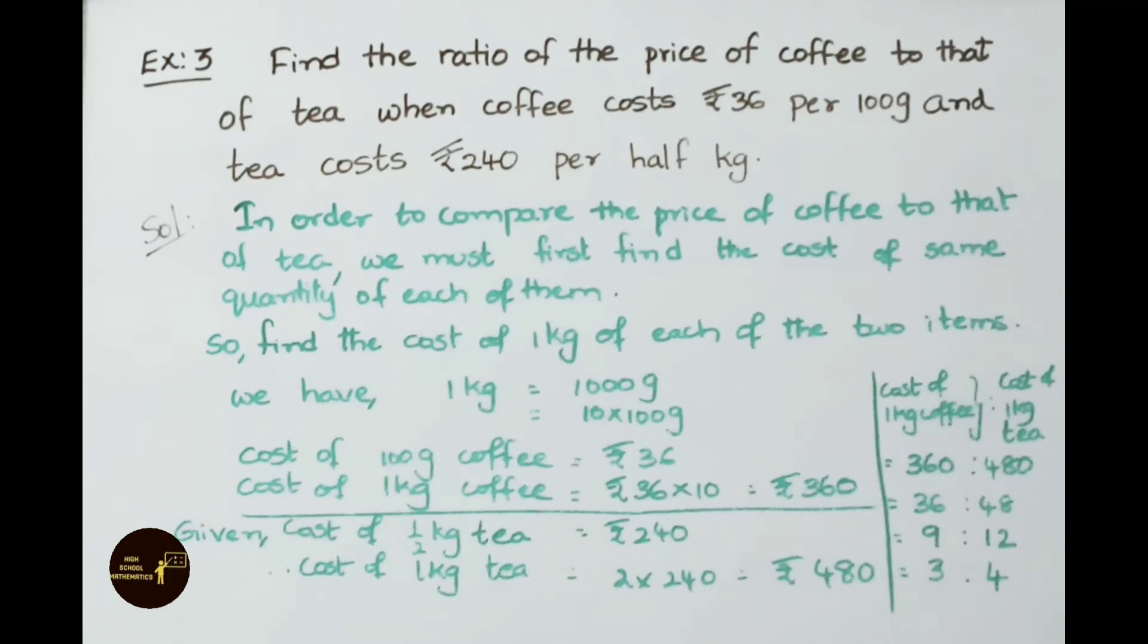We shall divide both the terms by 10. Then we get the value 36 is to 48. Again these two terms we shall divide by 4. 4 nines are 36, 4 twelves are 48. Dividing the both terms by 3, 3 threes are 9, 3 fours are 12. So the ratio is 3 is to 4.